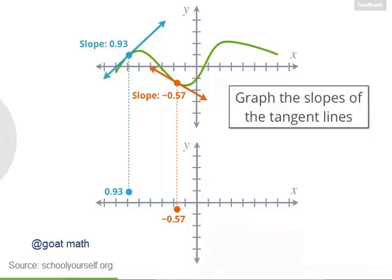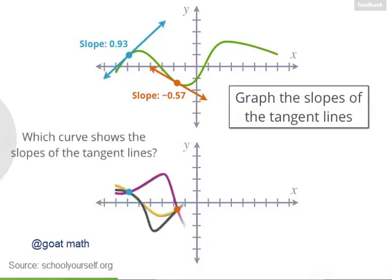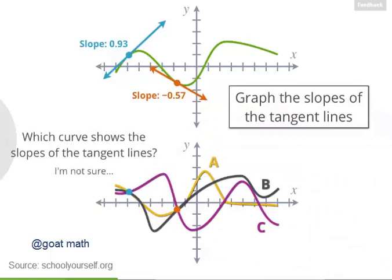If we did this for all the points in the top graph, plotting the slopes of their tangent lines, which of these curves would we get? But if you're not sure, click here, and we'll work our way through this question.